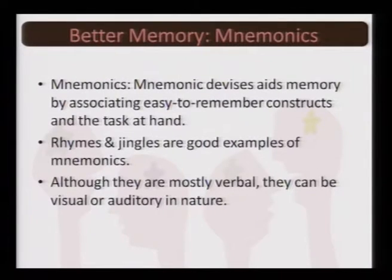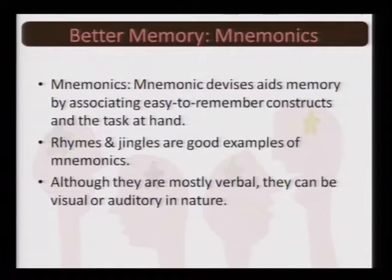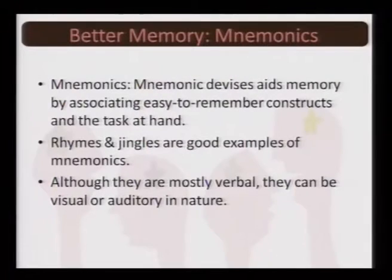The second process is mnemonics. Mnemonic devices aid memory by associating easy-to-remember constructs with the task at hand. You have some easy-to-remember constructs and then you associate them with the task — the better you associate them, the better your performance. Rhymes and jingles are good examples of mnemonics. Heavy content put into rhythmic, jingle form is very easily reproduced and memorized. Although mostly verbal, mnemonic devices can also be visual and auditory in nature.